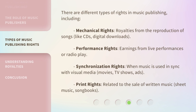There are different types of rights in music publishing, including: mechanical rights — royalties from the reproduction of songs like CDs and digital downloads; performance rights — earnings from live performances or radio play; synchronization rights — when music is used in sync with visual media like movies, TV shows, and ads; and print rights — related to the sale of written music such as sheet music and songbooks.